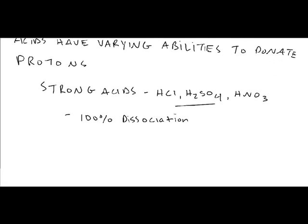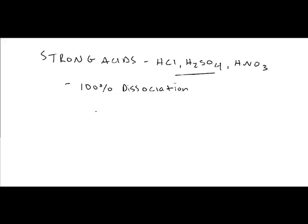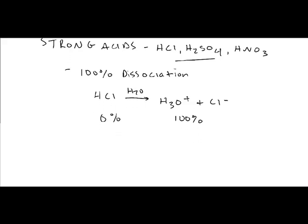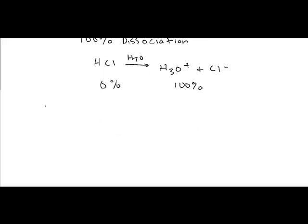It means that if you put HCl in water, the reaction will go 100 percent to make H3O plus and chloride ion. It's going to go all the way, so at the end you're going to have zero percent of this and a hundred percent of that. So those are strong acids. Let's look at weak acids.